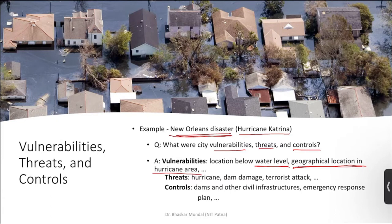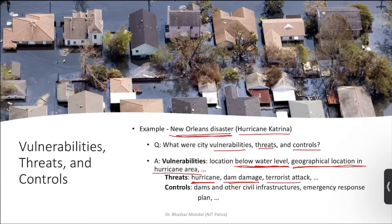From the city perspective again, what was the threat? As it is in a hurricane-prone area, evidently hurricane is the first threat. Other threats include dam damage — since this city is below water level, if any dam around the city is damaged it will be flooded — and terrorist attacks and so on. These threats can be analyzed.